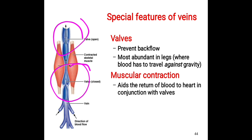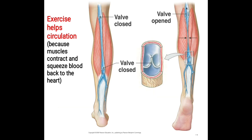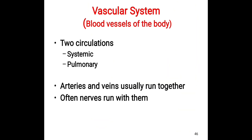The second mechanism is muscular contraction, which aids the return of blood to the heart. Since blood pressure in veins is low, muscular activity helps push blood upward through the veins toward the heart. This is also why exercise is important for circulation — because muscle contraction squeezes and pushes blood back to the heart.